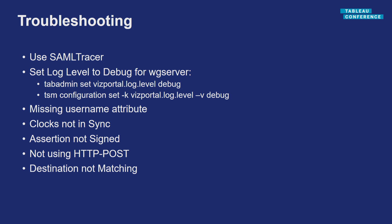Troubleshooting tips and tricks: SAML Tracer is very, very useful. You can also set the log level for your VizQL Server process. If you're using an older version of Tableau Server, you can use tabadmin or TSM to set the configuration to a lower log level to capture more information — but keep in mind this should only be a temporary change. One key issue we've found in several instances is that the username attribute itself is missing, so be on the lookout. All assertions are timestamped as well, so if clocks are out of sync, your assertions may actually fail.